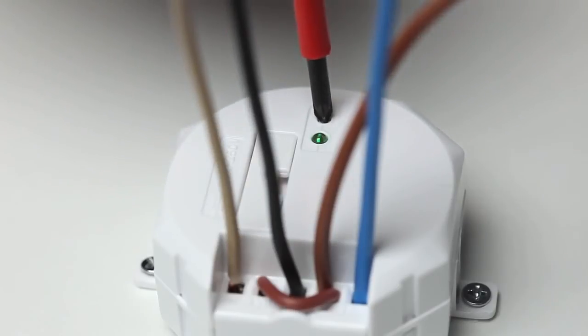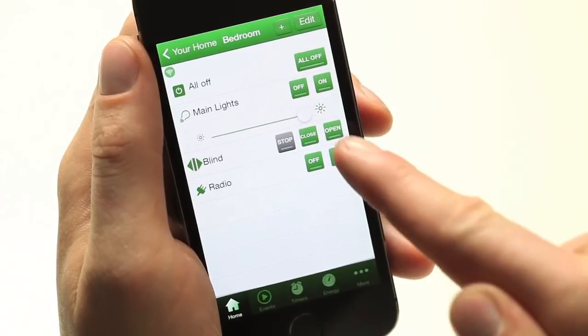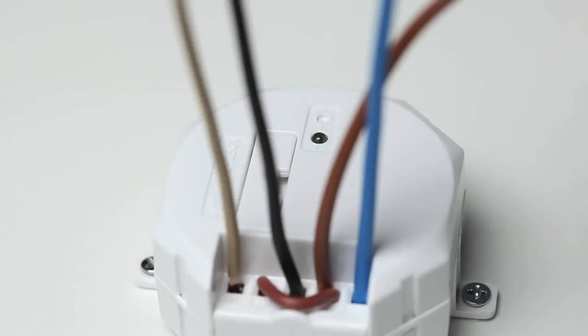Using a screwdriver, press and hold down the linking button on the inline relay until the green LED starts to flash. Press the open button once on the smartphone app. The LED on the relay will flash quickly for two seconds and a clicking noise will be heard.